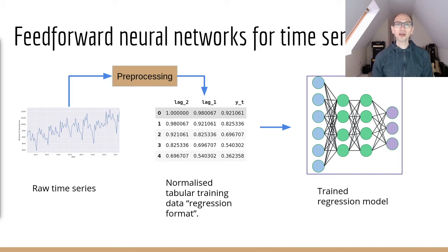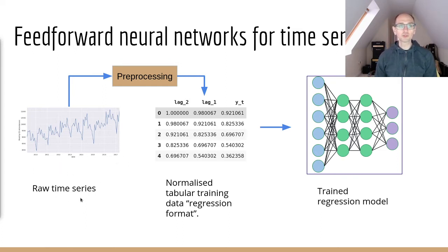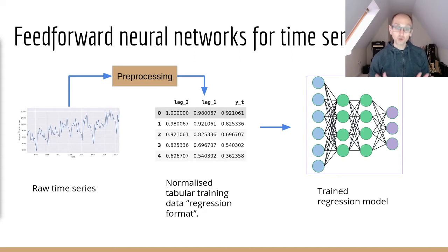What we need to do with a neural network is first pre-process our data. Here we've got an example time series data and I've called that the raw time series. We're going to feed that data through some pre-processing logic, and at the end of that what's going to pop out is a table of data that's suitable for a regression model and neural network. I've called that normalized tabular training data because unlike ordinary least squares regression, neural networks like data to be normalized or standardized in some way.